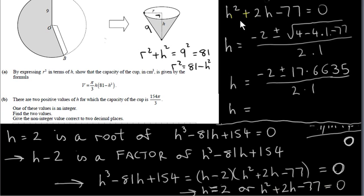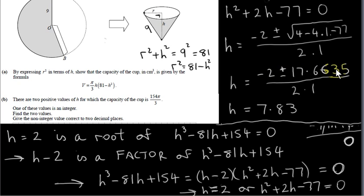By putting h squared plus 2h minus 77 equal to zero, we get a quadratic equation and can solve it for new solutions. When getting the square root, write it to several decimal places since we want our final answer to two decimal places. Taking the positive value, we get h equals 7.83 to two decimal places. We don't take the negative value because h must be positive. So 7.83 is the second, non-integer solution.